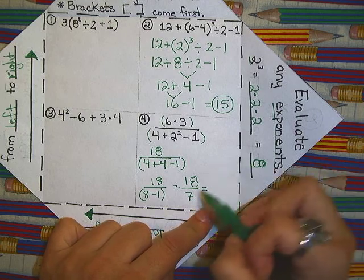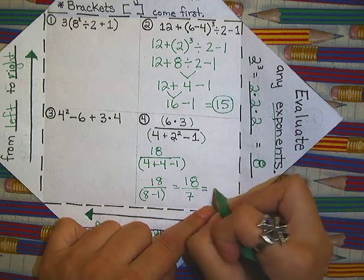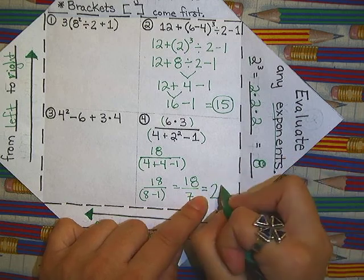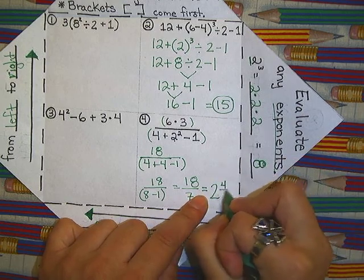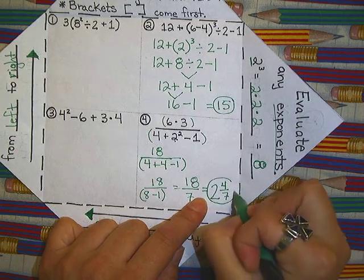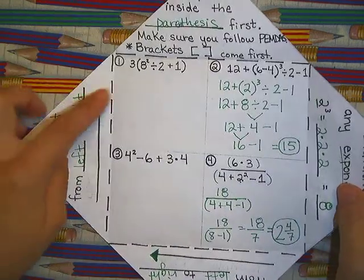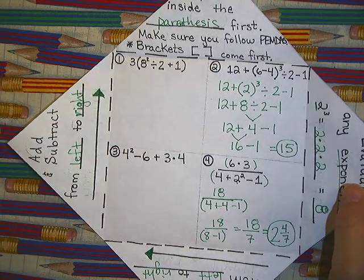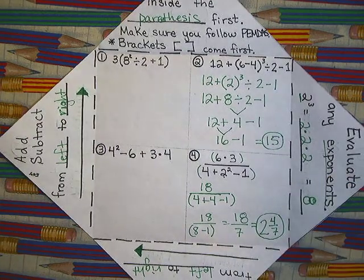And then now I've got my two values so I can divide. Eighteen divided by seven. You can either write the decimal or fraction value, but fractions easiest. Seven goes into eighteen two times, which would be fourteen and what would be left if I took fourteen out would be four. So two and four sevens.